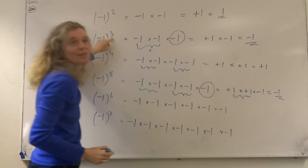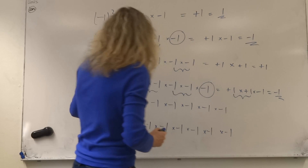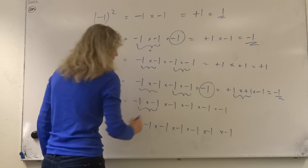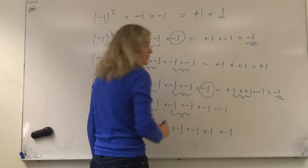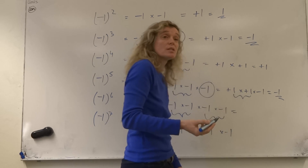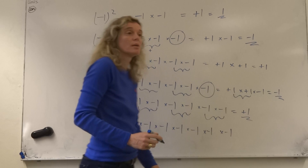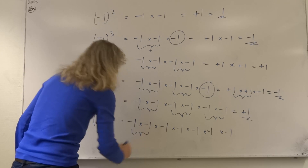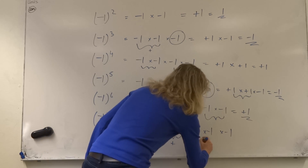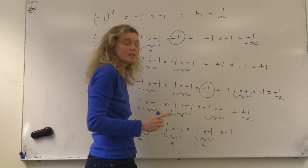So I'd expect minus one to the power of six to be positive. Let's have a look: minus one times minus one is positive, minus one times minus one is positive, minus one times minus one is positive — giving us three positive ones. Plus one times plus one times plus one, the answer is plus one. Here we have two negative ones giving a positive, multiplied by two negative ones giving a positive, multiplied by two negative ones giving a positive — when we multiply all these positives together we get positive.